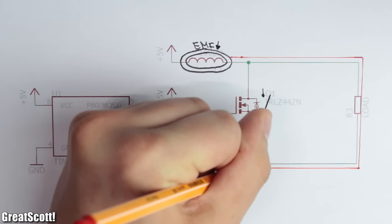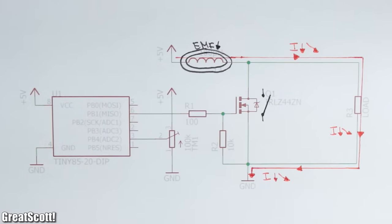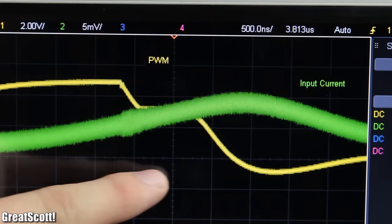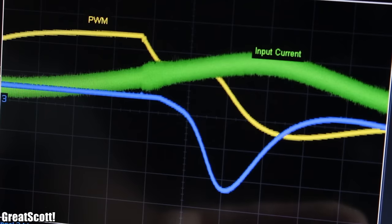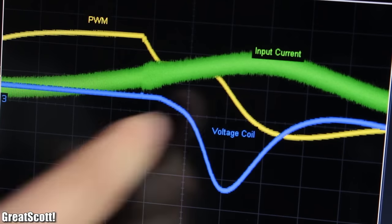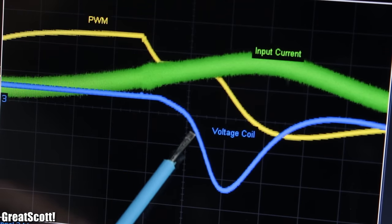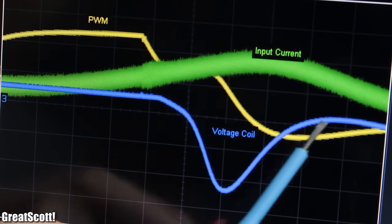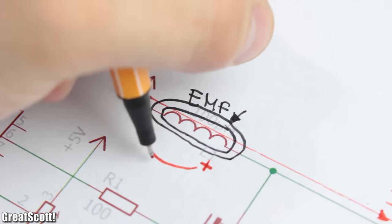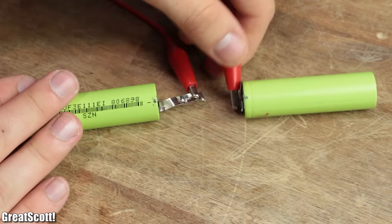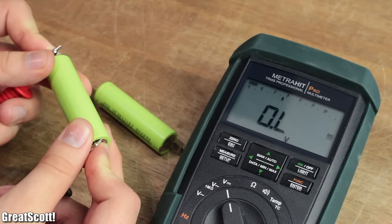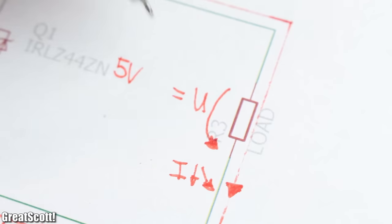field collapses and pumps its energy into the load, which results in a decrease in current flow. Since the slope of the current is rapid and negative, we can use the formula of the inductor voltage once again and observe a big negative voltage across the coil. This means we now have two voltage sources in series, and they behave just like two batteries in series. The output voltage is the sum of the individual voltages, and thus the